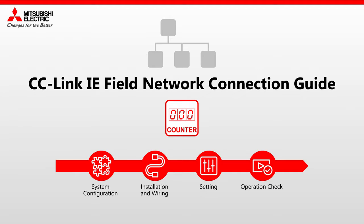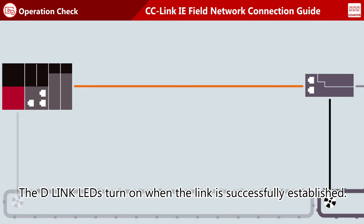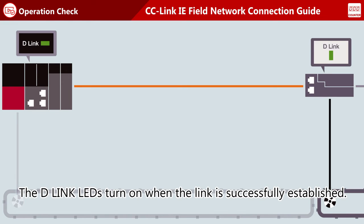CC-Link IE Field Network Connection Guide for High-Speed Counter. Having finished all settings, connect the stations to the network. If the link has been successfully established, the Data Link LEDs on the master and remote stations turn on.